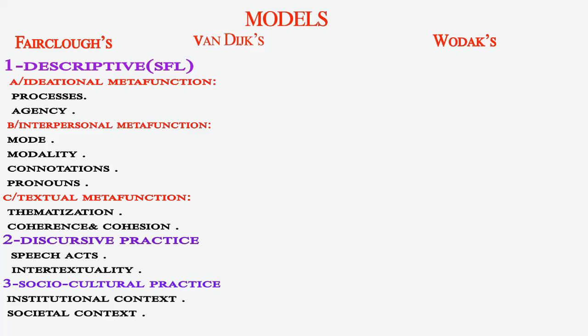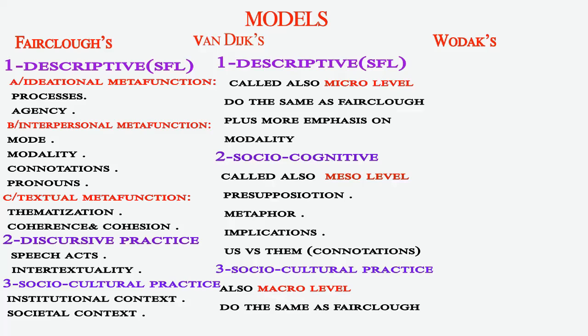Second, we have Van Dyck's model, which is also composed of three dimensions. The first is like Fairclough's — the script is SFL, also called the micro-level — with the same elements as Fairclough's but with more emphasis on modality. The second dimension is called socio-cognitive, also called the meso-level. We analyze presuppositions, metaphor, implications, and connotation.